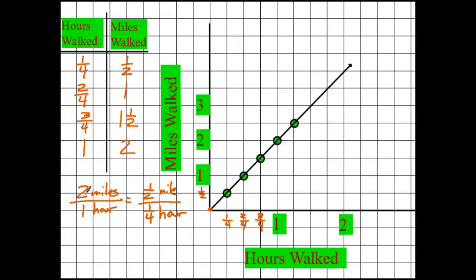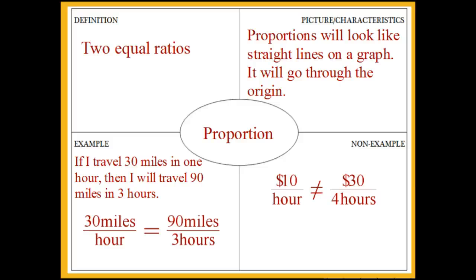Hopefully you guys have a general understanding of that. If not, write down what you're having a hard time with and bring it to class. We'll do a little more talking about this in class — how we know what a proportion looks like. Here's the graphic organizer I filled out: my definition is that a proportion is two equal ratios. A proportion will look like a straight line on a graph that goes through the origin. My example: if I travel thirty miles in one hour, then I will travel ninety miles in three hours. A non-example would be something where the ratios aren't equal — if I make ten dollars an hour, that's not the same as making thirty dollars in four hours. I will see you tomorrow.